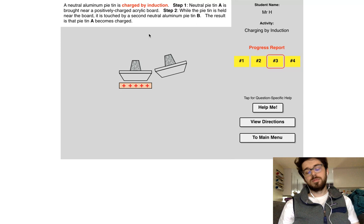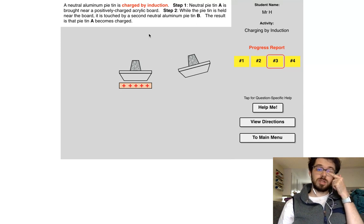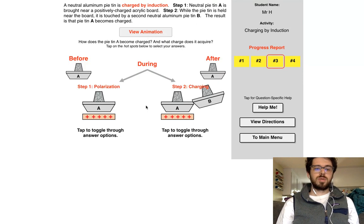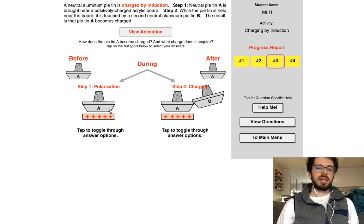Let's go ahead and see the animation — Python A is brought near the board, and in step two it gets touched by Python B. Now, when you bring this Python close to the charged acrylic board, what's going to happen is that the electrons are going to move...